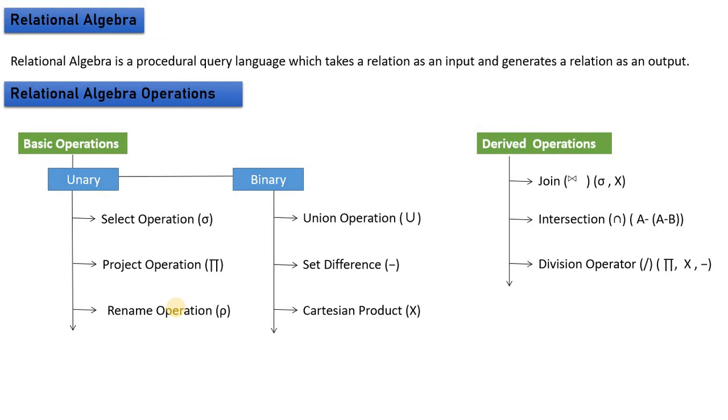Next is binary operations. Binary means you will have two tables. These operations perform on two tables. When you have two tables, the operations are performed and produce a single output.